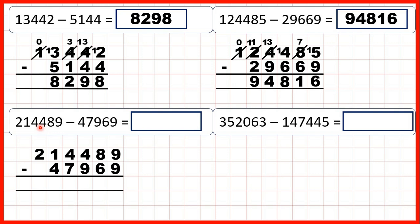Now we have 214,489 minus 47,969. 9 minus 9 is 0. 8 minus 6 is 2. We can't do 4 minus 9, so go to the left, one less, one in front — 14 minus 9 is 5.